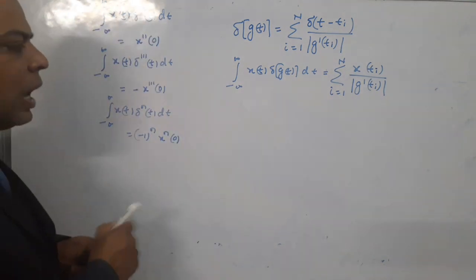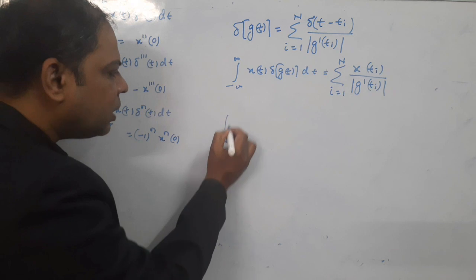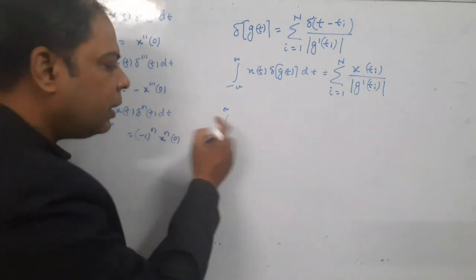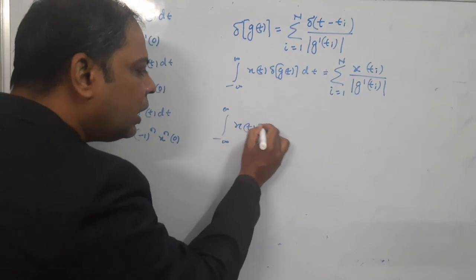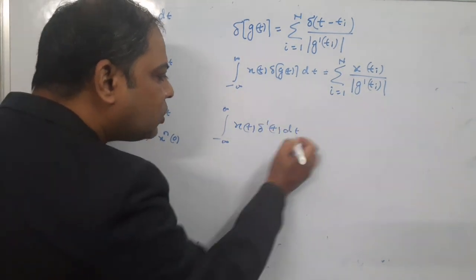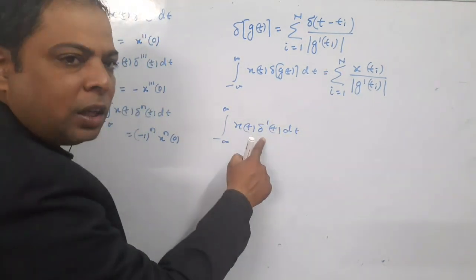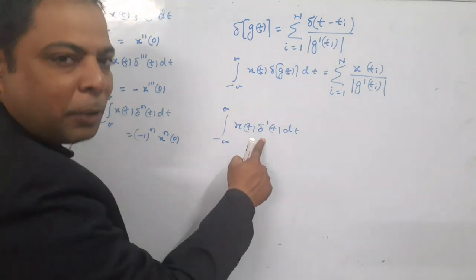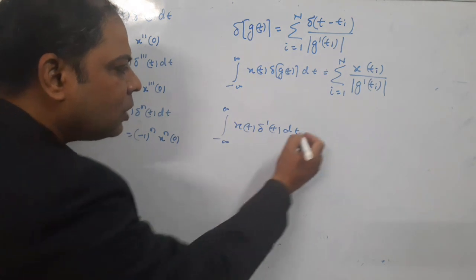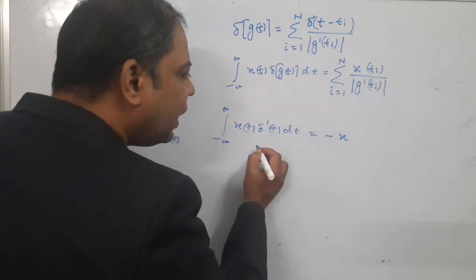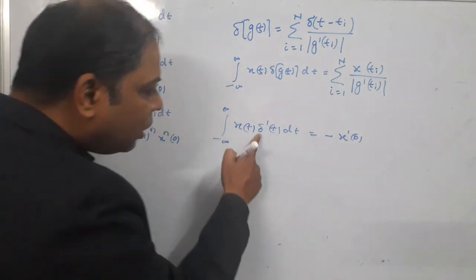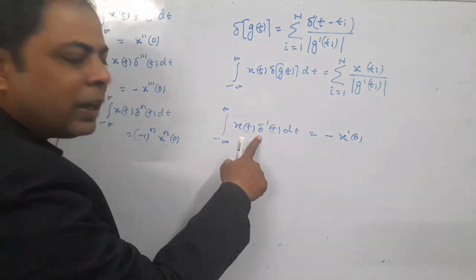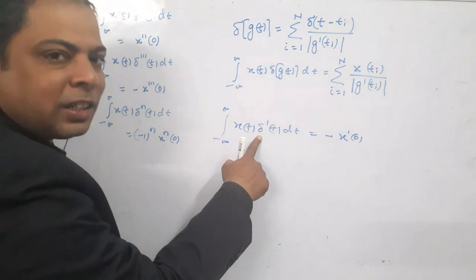In the doublet function last class, the integration from minus infinity to infinity of x(t) · δ'(t) dt was discussed. Here δ'(t) is known as the doublet function, and the last discussion result was minus x'(0). This is the first derivative of the impulse function, and that is why we call this the doublet function — that is the definition of the doublet function.